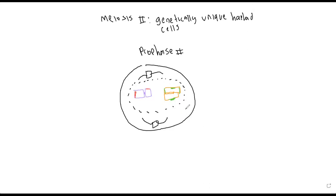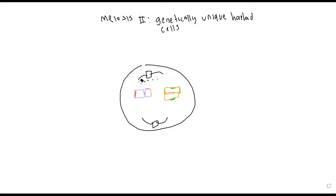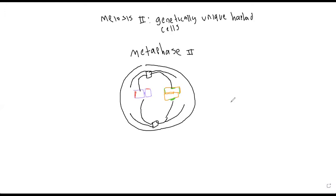Now we have metaphase 2. The nucleus is completely eliminated and the meiotic spindle manipulates the sister chromatids into the center of the cell. The meiotic spindle also widens the cell. Metaphase 2 is very similar to metaphase of mitosis — not nearly as much is going on here.